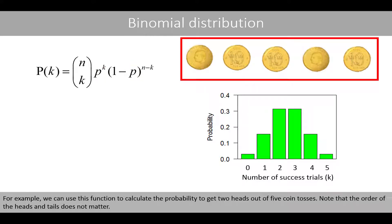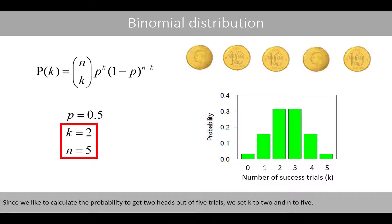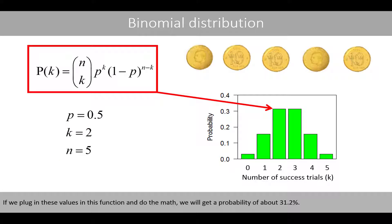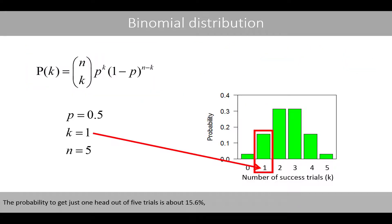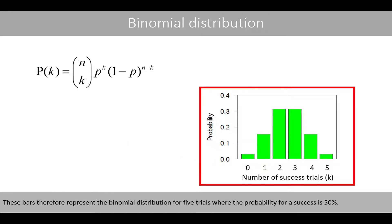For example, we can use this function to calculate the probability of getting two heads out of five coin tosses. Note that the order of heads and tails does not matter. Since we use a fair coin, there is a 50-50 chance, so p is set to 0.5. We set k to 2 and n to 5. Plugging in these values, we get a probability of about 31.2%. The probability of getting just one head out of five trials is about 15.6%, and no heads is about 3.1%. These bars represent the binomial distribution for five trials with a 50% success probability.